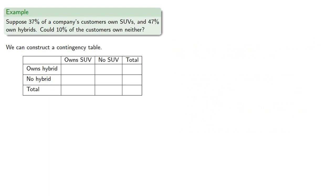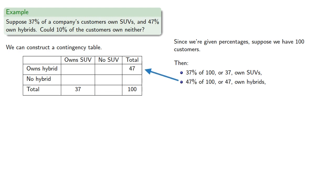Now we're given percentages, and since we're given percentages, it's convenient to suppose we have 100 customers. Then 37% of 100, or 37, own SUVs, 47% of 100, or 47, own hybrids, and let's see if it's possible to complete the table if 10% of 100, or 10, own neither.